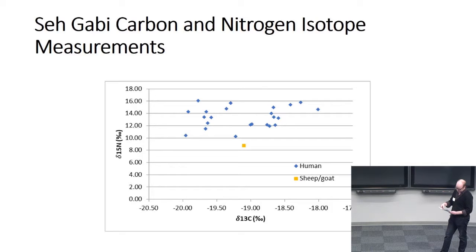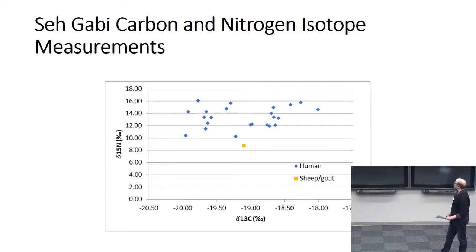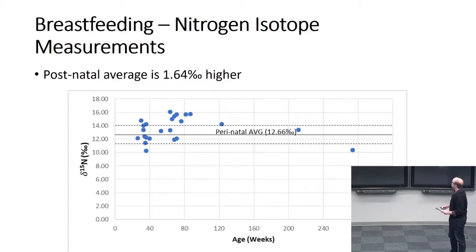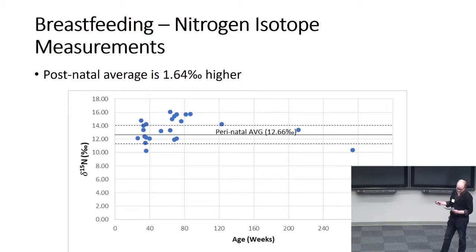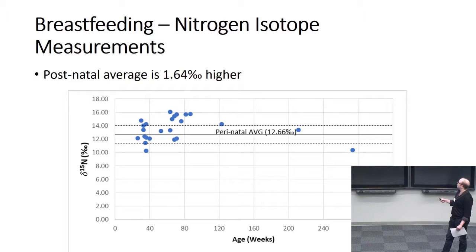In terms of nitrogen isotope values, the humans sit well above our one terrestrial herbivore, which suggests that they were subsisting on a large amount of animal products. As far as breastfeeding is concerned, the nitrogen isotope values of postnatal individuals are significantly higher than those of the perinatal individuals, which is substantial evidence that the children were being breastfed, likely up to at least one year of age.